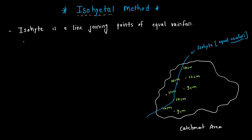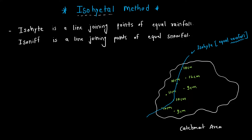One more related term: isoniph. An isoniph is a line joining points of equal snowfall, as opposed to isohyet which is for rainfall. That is the difference between isoniph and isohyet.